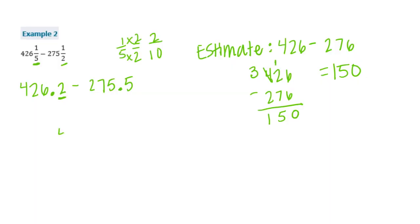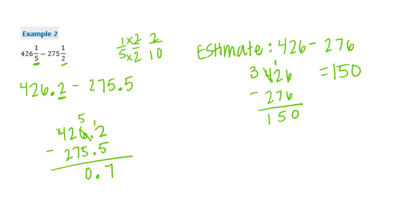Now let's actually subtract. Bring the decimal point straight down, and I'm going to have to borrow right away. Borrow from the 5 — this becomes 12 minus 5 is 7, 5 minus 5 is 0. 2 minus 7, I need to borrow — 12 minus 7 is 5. And 3 minus 2 is 1. So we get 150 and 7 tenths, which is very close to our estimate of 150.